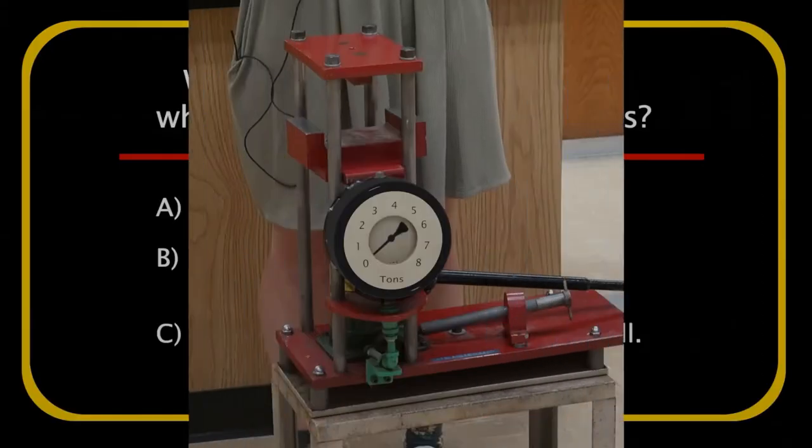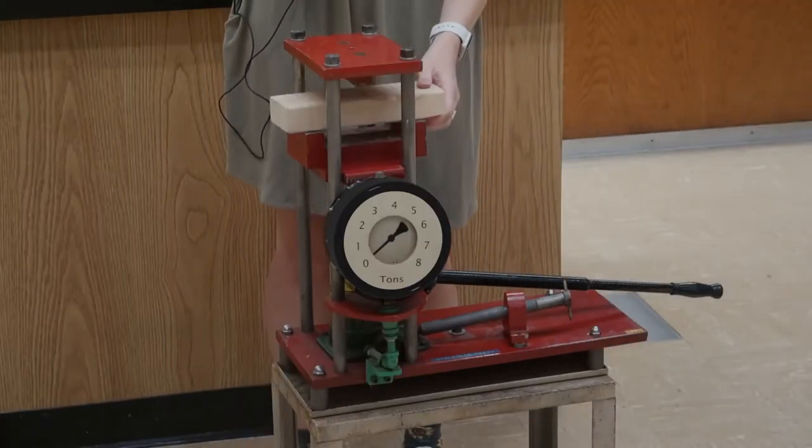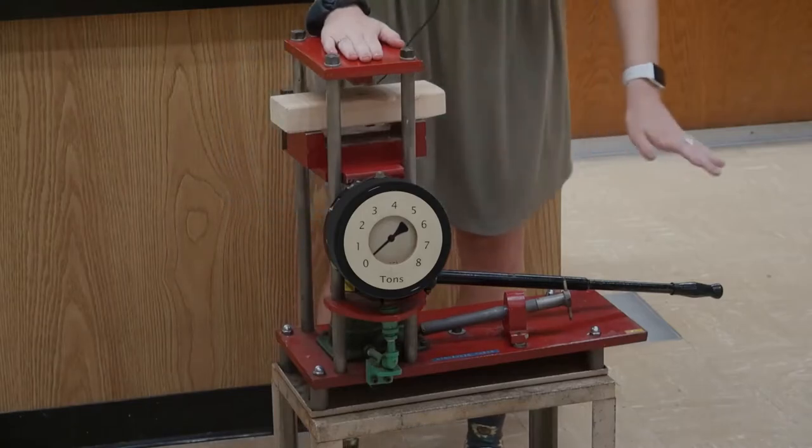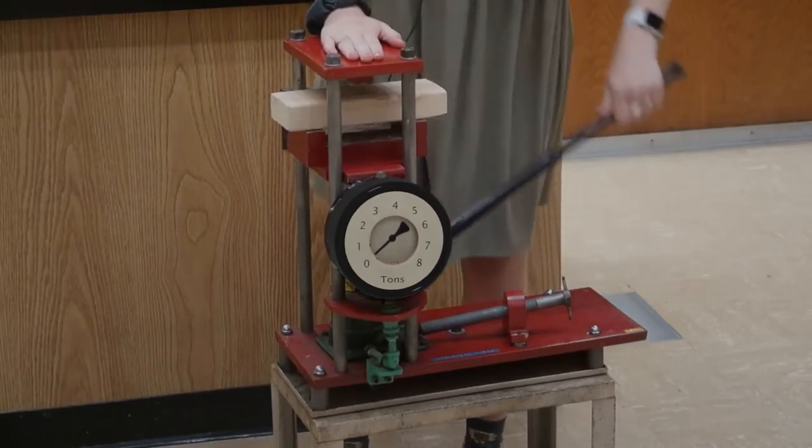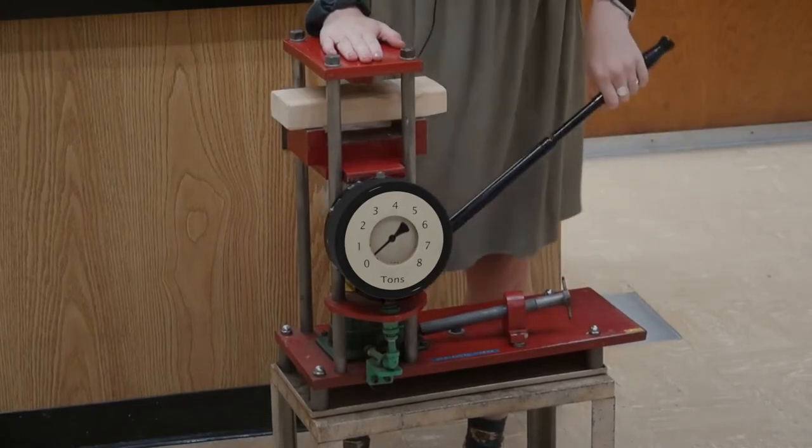All right, so as I said, I have this piece of 2x4 wood and I will be inserting it here into the press. Right here I have a crank, and as I crank this, the press will slowly start to increase in pressure.